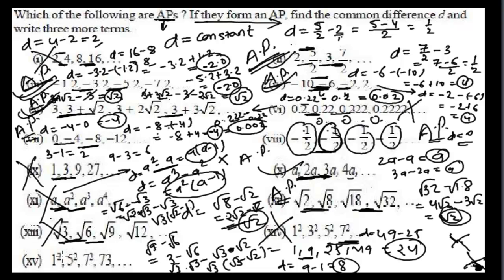For the sequence 1², 5², 7², 73... which is 1, 25, 49, 73: the common difference is 25 minus 1 equals 24. Then 49 minus 25 equals 24. And 73 minus 49 equals 24. Since the common difference is 24 throughout, this is an arithmetic progression.